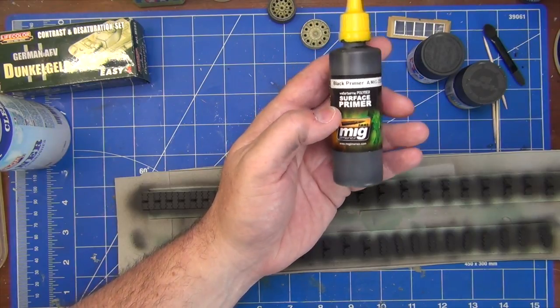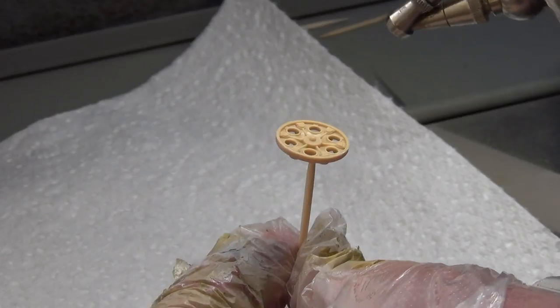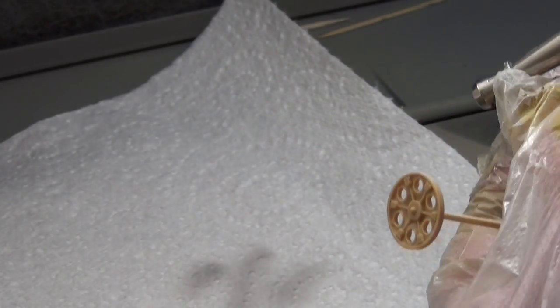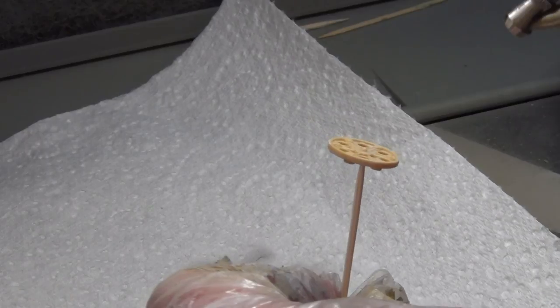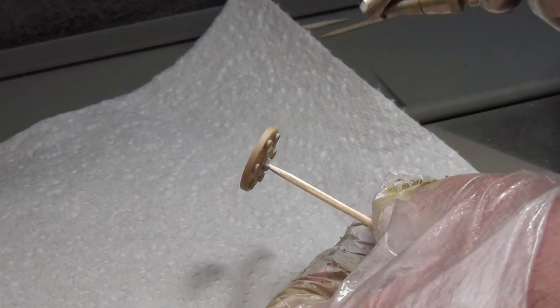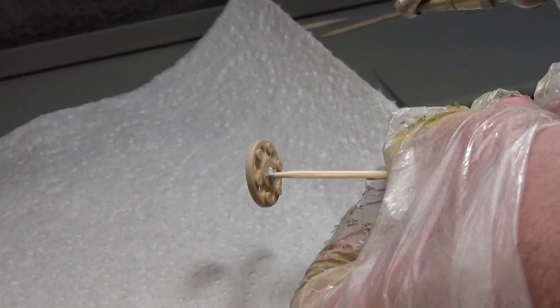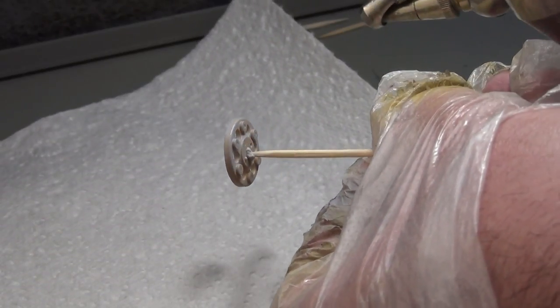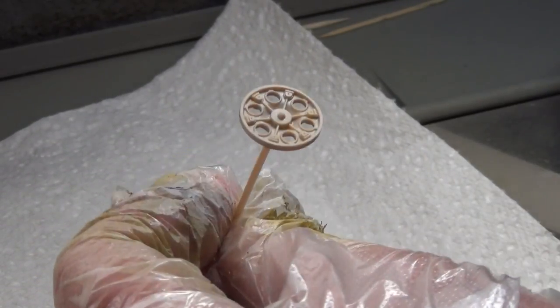I know some people have had trouble online with these particular primers, but to me, the secret to using them is just to shake them thoroughly. And mist a coat on initially. Don't try and put them on in one coat. Just mist it on so you break the surface tension. And then apply one or two layers, and you'll be good to go. Which, by the way, would be my recommendation for working with the Life Colour paint as well.